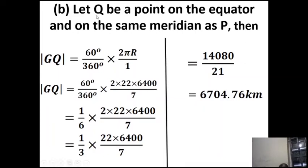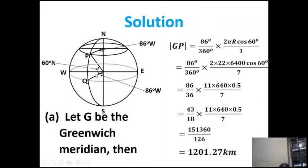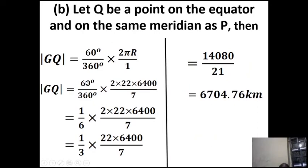For the second question, let Q be the point on the equator on the same meridian as P. The distance from Q to P is (60° / 360°) × 2πr — there is no cosine of latitude here because along the meridian, everything is on the great circle. Putting in values and evaluating, we get the distance to be 6,704.76 kilometers.